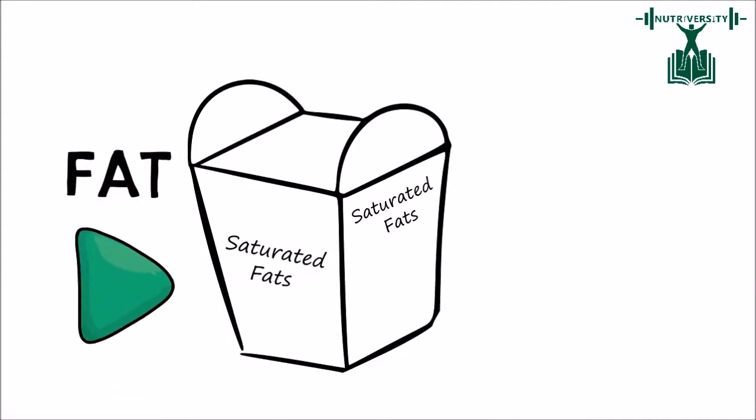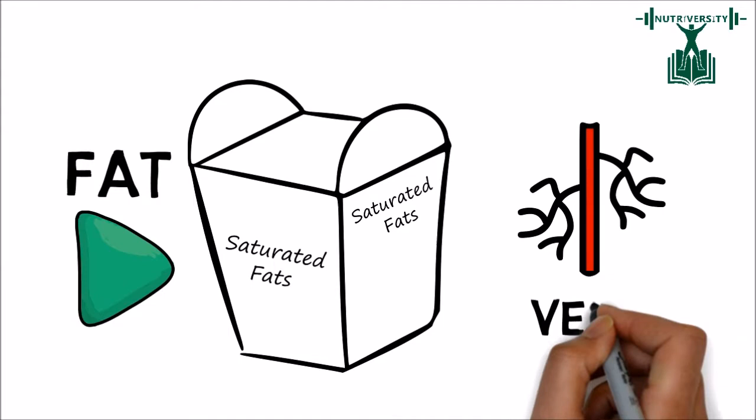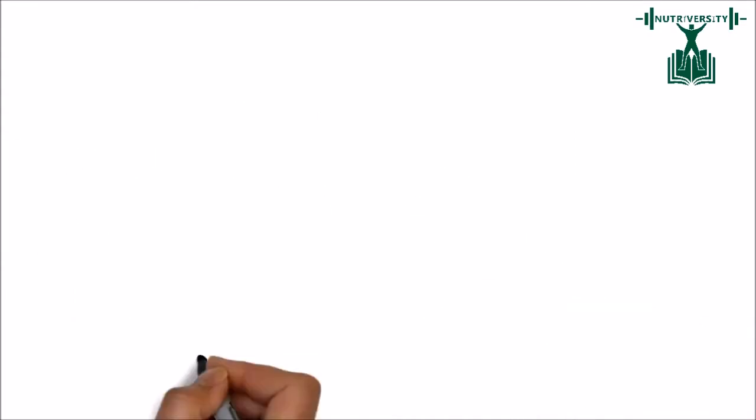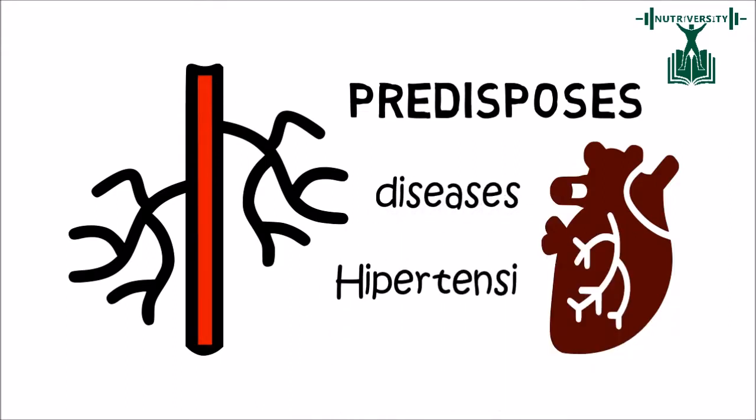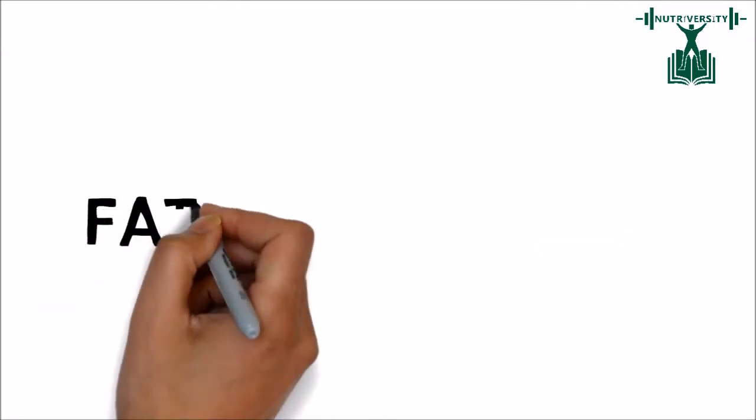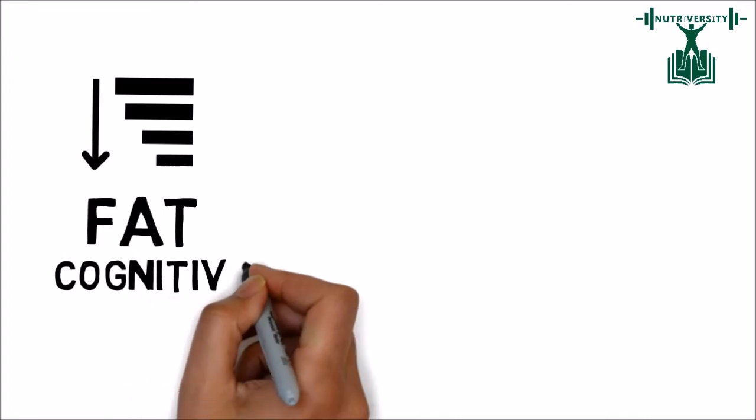Fat, especially saturated fats, leads to the formation of plaque in arteries and veins. The arteries narrow, which predisposes one to cardiac diseases such as hypertension. Fat also leads to lower cognitive levels.